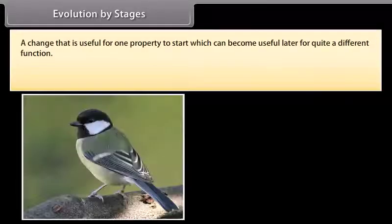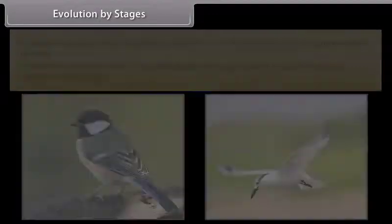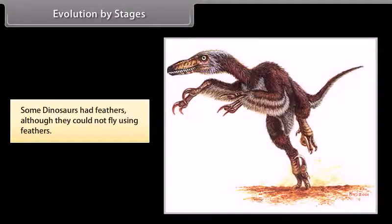Evolution by stages: A change that is useful for one property to start with can become useful later for quite a different function. Example: feathers can start out as providing insulation in cold weather, but later they might become useful for flight. Some dinosaurs had feathers although they could not fly using feathers.